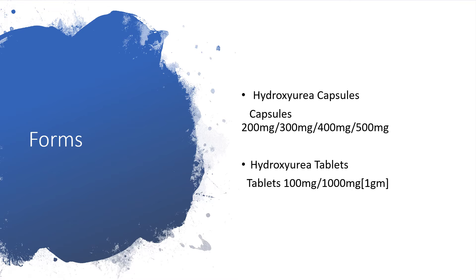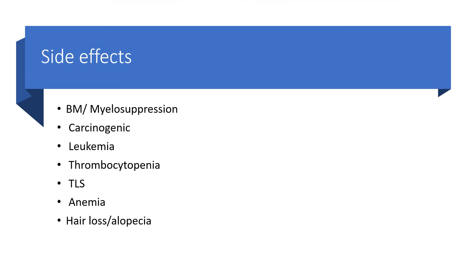Hydroxyurea is available at 100 mg or 1000 mg (1 gram). Key side effects include bone marrow suppression, carcinogenicity, leukemia, thrombocytopenia, tumor lysis syndrome, anemia, and hair loss or alopecia.